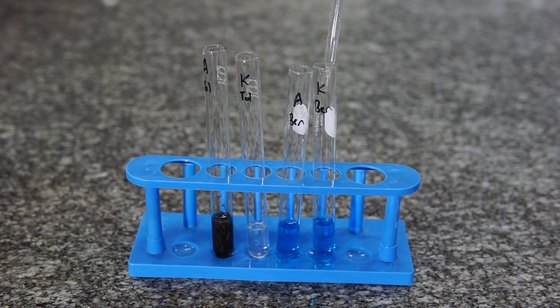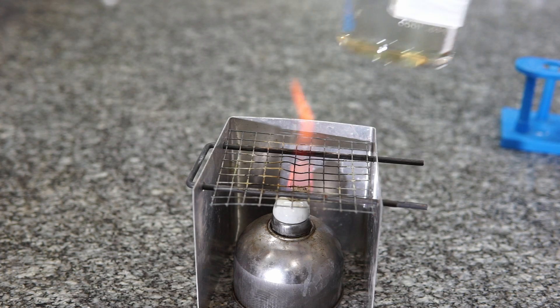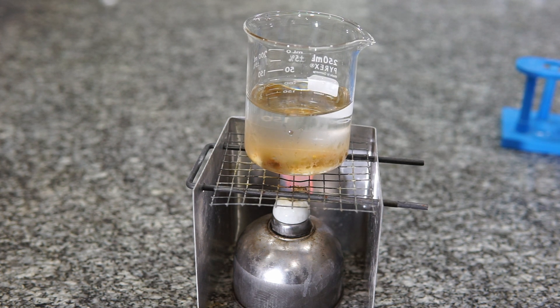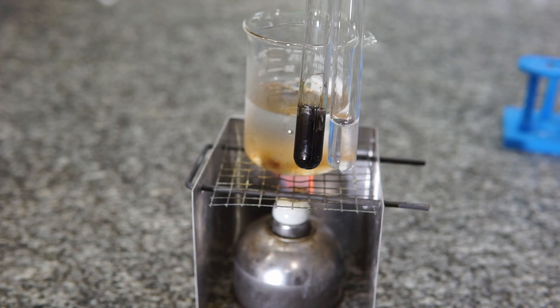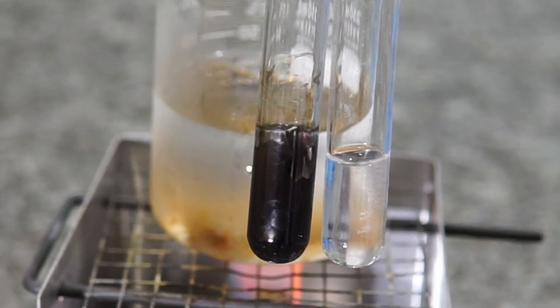And again to the Benedict solution, still no reaction. Next up we need to heat the samples. We did get a reaction already in the Tollens reagent, but the heating will allow it to develop further and also allow the Benedict solution to react if... you look here at this close-up, we can see we've got a silver tinge already appearing.